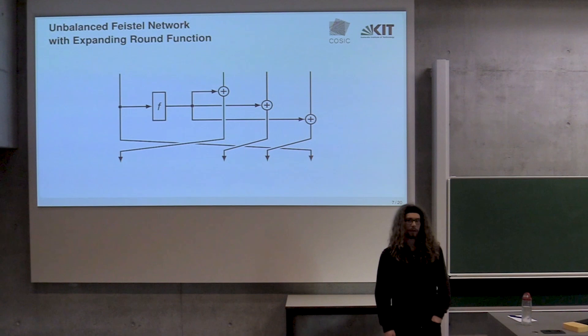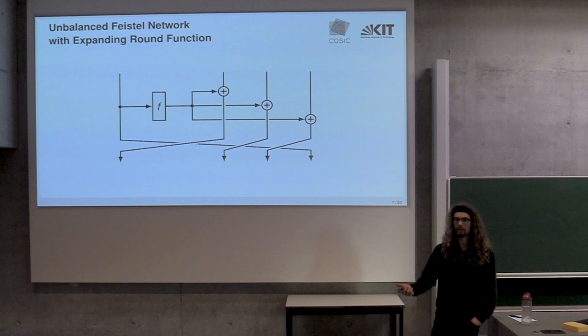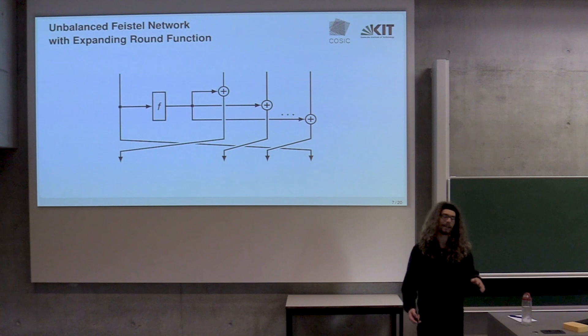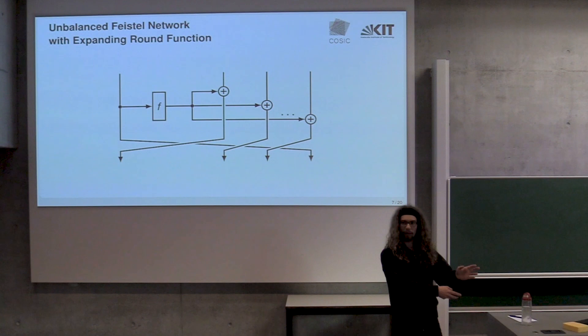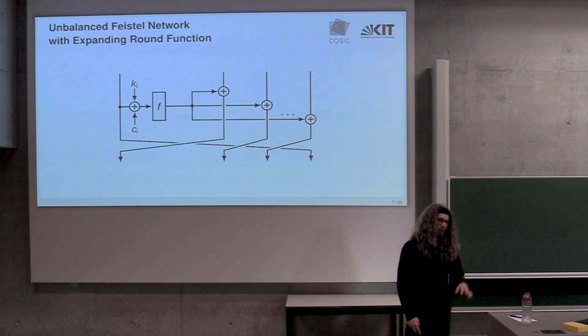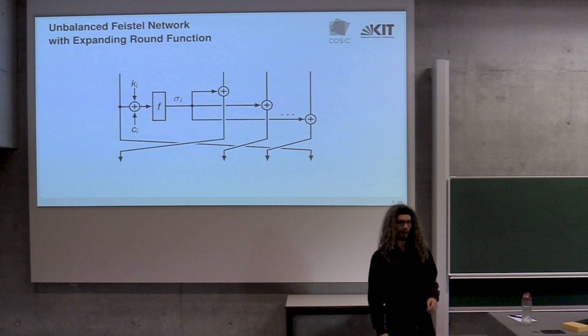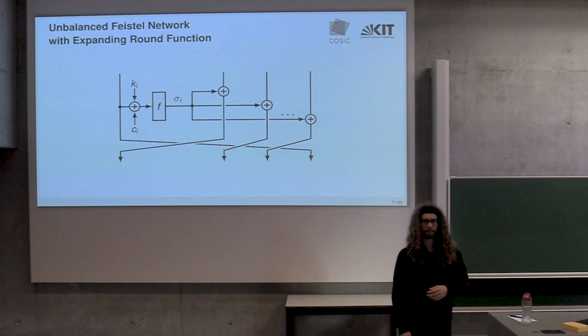The other piece of background information is what is an unbalanced Feistel network. This is one round of an unbalanced Feistel network. In this case, it has four branches, it can be anything. What we have here is we take the leftmost branch, shoot it through some function F and apply that result additively to all the other branches. That's the expanding round function. Usually there's a round key added, some round constant added. It's an iterative block cipher. Because we will need the output of the round function quite a lot, I give it a name sigma i.